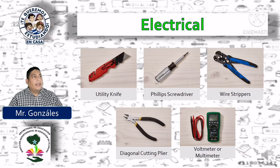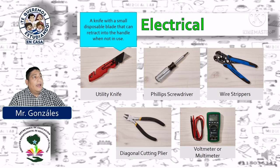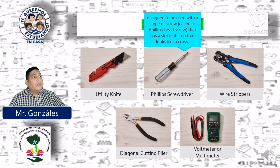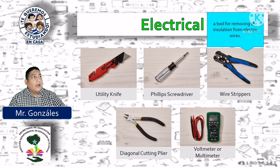Electrical area. En el área de electricidad o electrónica también se usan herramientas iguales o similares. Utility knife: a knife with a small disposable blade that can retract into the handle when not in use. Un cuchillo con una cuchilla desechable que puede retractarse a su mango cuando no se está utilizando. Phillips screwdriver: designed to be used with a type of screw called a Phillips head screw that has a slot on top that looks like a cross. Diseñado para ser utilizado con un tornillo de cabeza Phillips que tiene una muesca en la parte superior que se ve como una cruz. Wire stripper: a tool for removing the insulation from electric wires. Una herramienta para remover el aislamiento de los cables eléctricos.